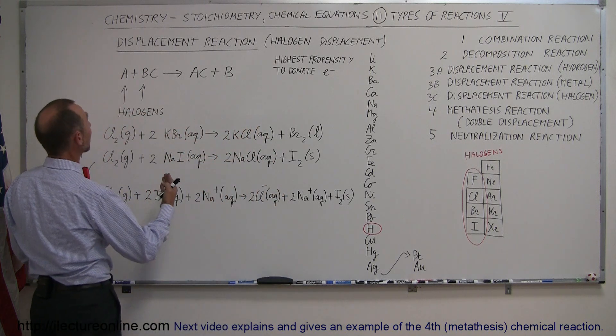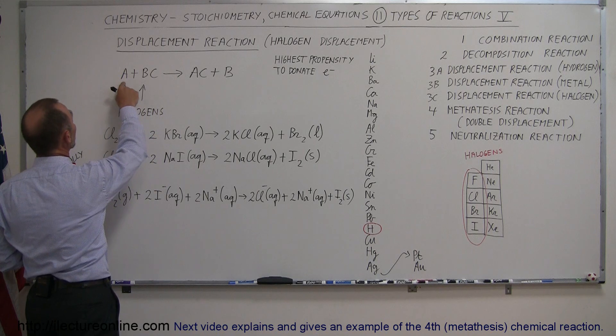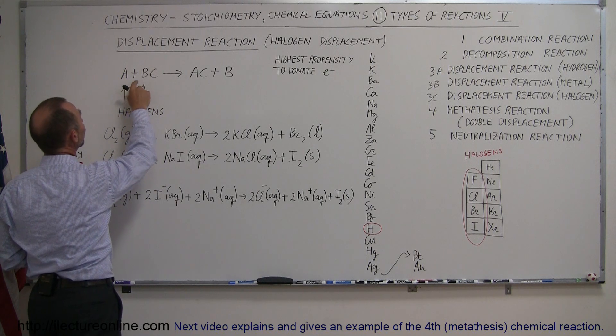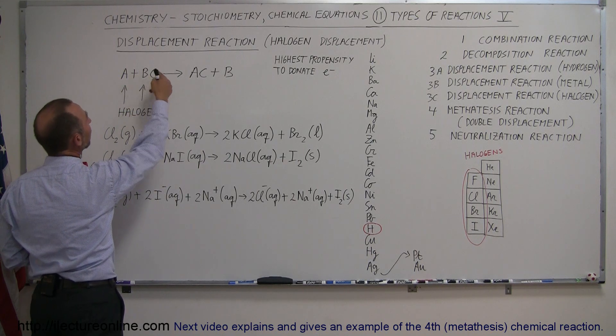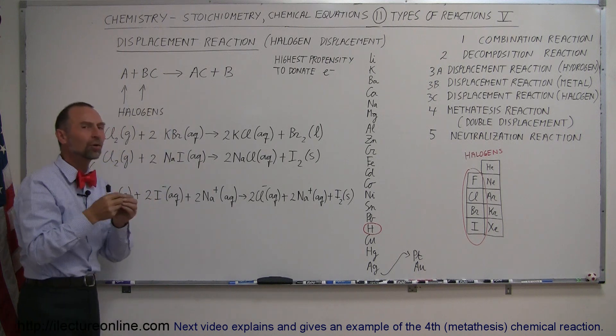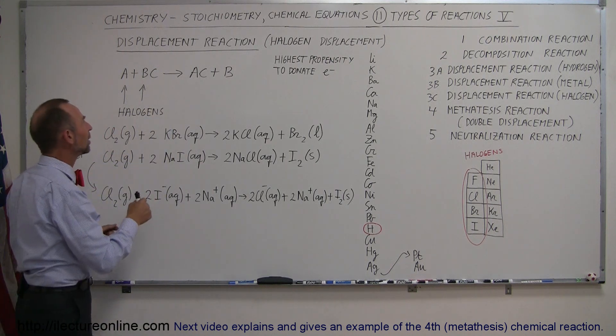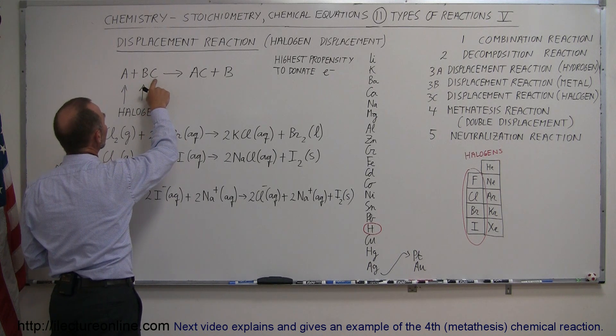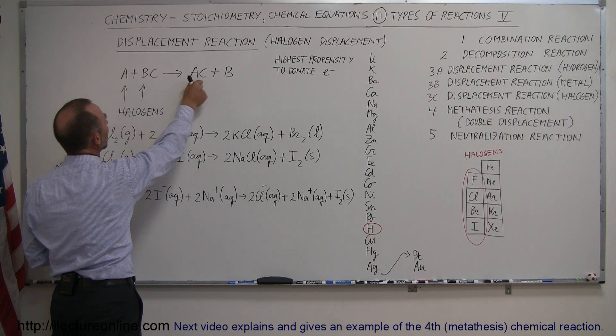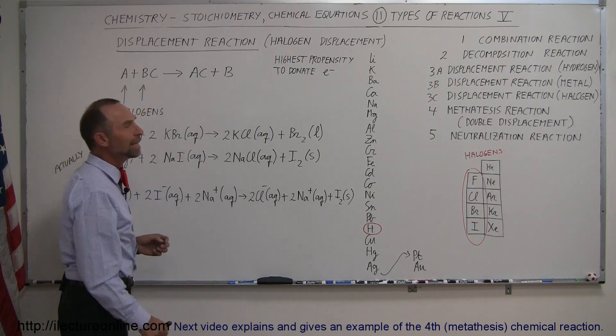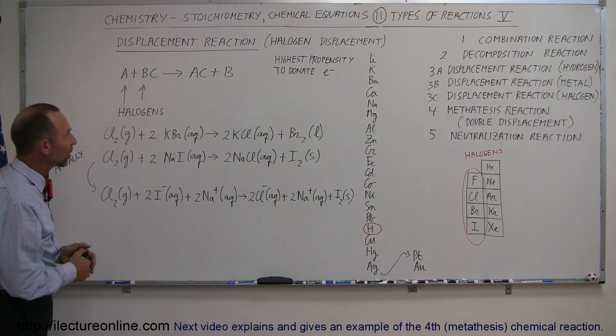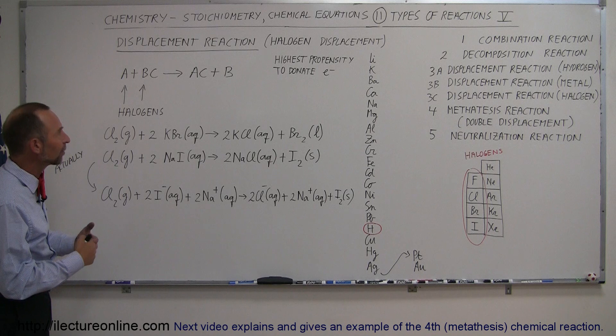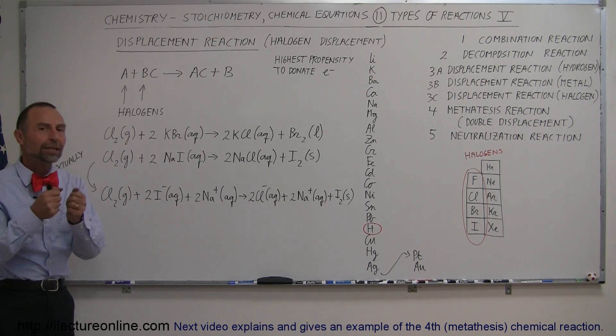In a displacement reaction, we have an element being introduced to something that's already bonded together in an aqueous solution. When it goes into aqueous solution, they dissociate into ions. The C ion will then connect with the A ion and precipitate out the B ion. Sometimes that becomes a solid, sometimes a liquid, but it becomes an element. This is due to the exchange of electrons.